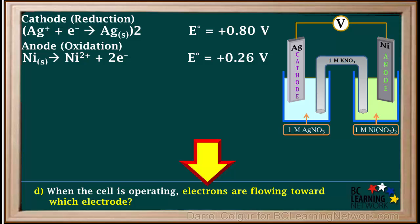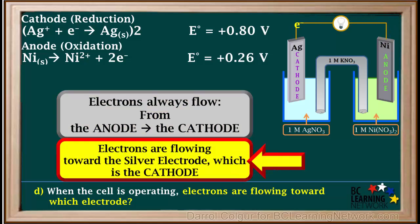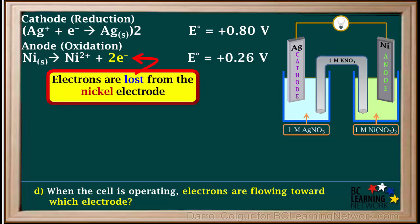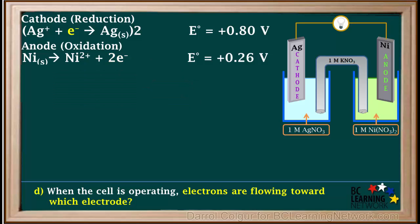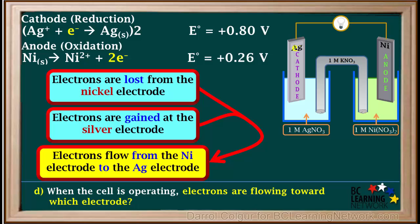Part D asks toward which electrode electrons are flowing as the cell operates. Electrons always flow from the anode toward the cathode in the wires. So electrons move from the nickel anode toward the silver cathode. The half reaction for the nickel electrode tells us electrons are lost from the nickel electrode, and the half reaction for silver tells us electrons are gained at the silver electrode. Therefore, electrons are flowing toward the silver electrode as this cell operates.